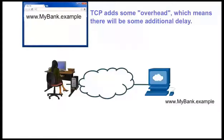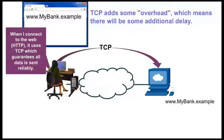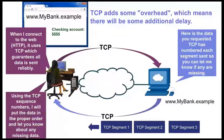Here the user types in the URL www.mybank.example. TCP is used to transport the information reliably between the user's computer and the web server. The web server, also using TCP, sends the requested data — the web page — in separate segments. Each segment includes a sequence number so the receiver knows if anything is missing and so it can assemble it in the proper order.